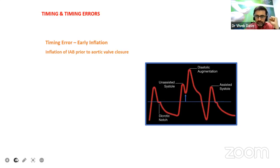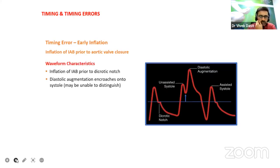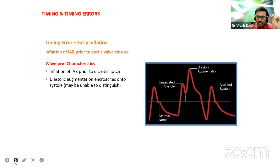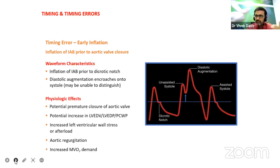Timing error: when there is early inflation — inflation of IABP prior to aortic valve closure — the waveform characteristics show inflation prior to dicrotic notch and diastolic augmentation encroaches onto systole. Physiologic effects of early inflation include potential premature closure of aortic valve, potential increase in left ventricular end-diastolic volume, increased left ventricular wall stress, aortic regurgitation, and increased oxygen demand.